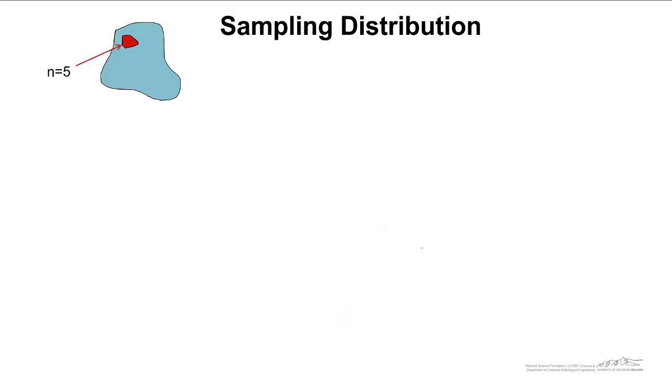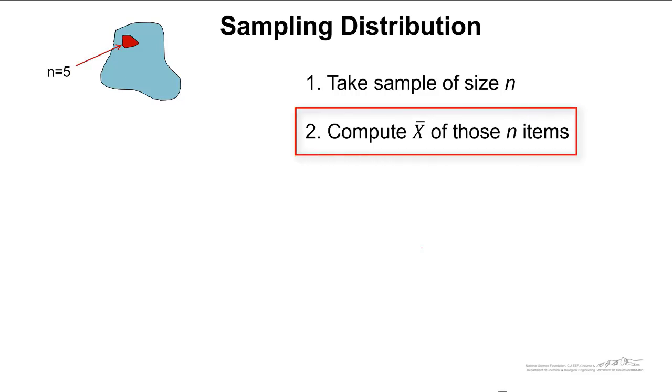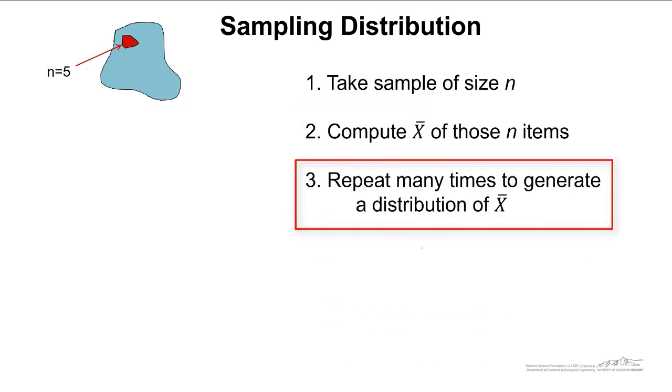A sampling distribution is a little bit different. We have our population, again outlined by this blue shape, but we took samples of n equals, for example, 5 here. So we took samples of size greater than 1. If we did this and computed the average of those n items, and we repeated this many times, we could generate a distribution of the statistic x bar, which is the sample average.